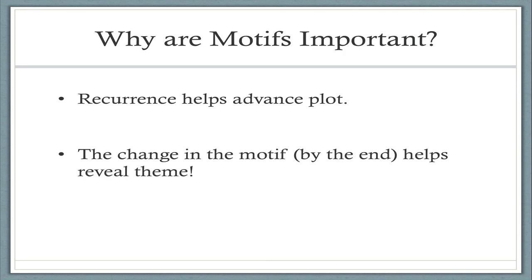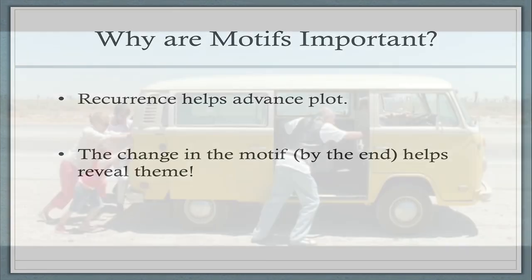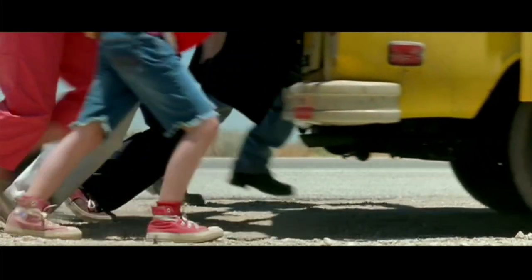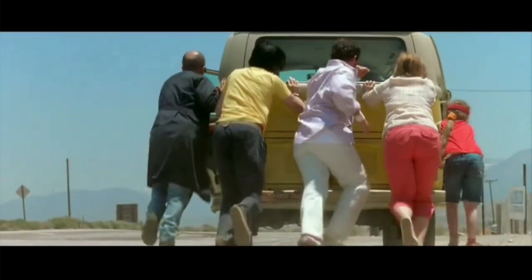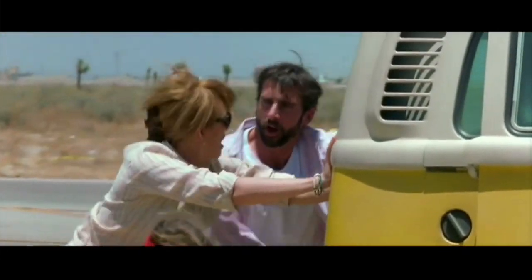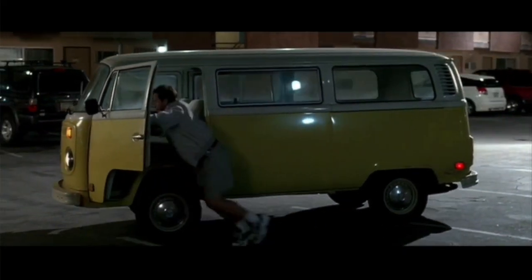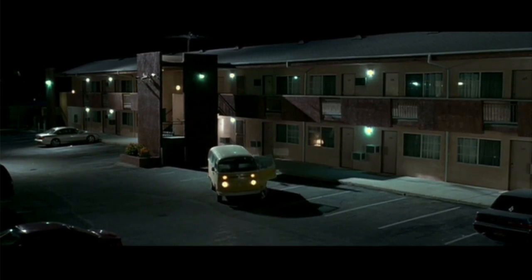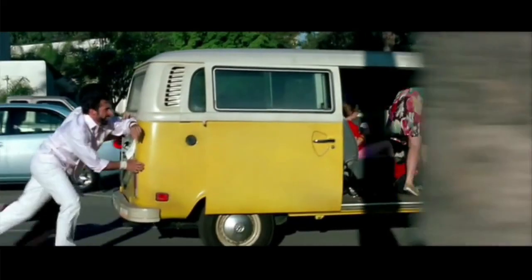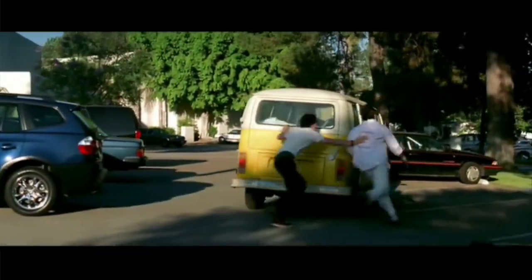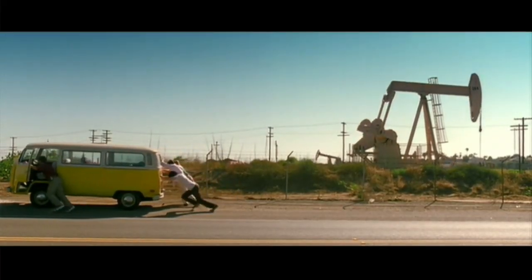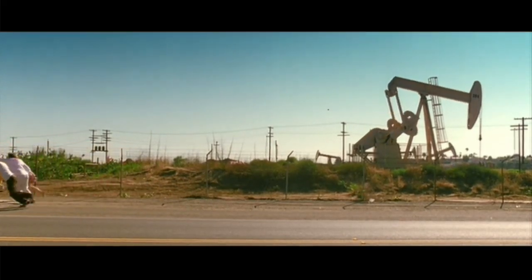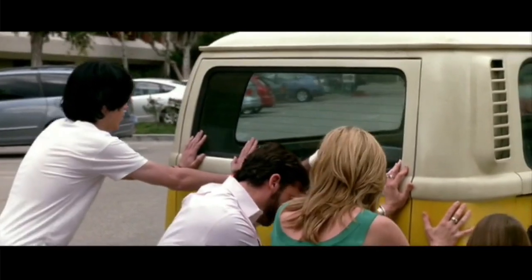So why are motifs important? The recurrence of a motif can help reveal the theme or the lesson of that text. These reoccurring elements help advance the plot — they're woven in between the plot, and motifs begin to matter when we look at the change in them throughout a text. To find motifs, we have to be active viewers of film. We have to look for recurring patterns — items, colors, actions, or lines of dialogue we've seen before. If we're not paying attention and viewing actively, we won't see any of these patterns, so we need to make a commitment to view the film actively.